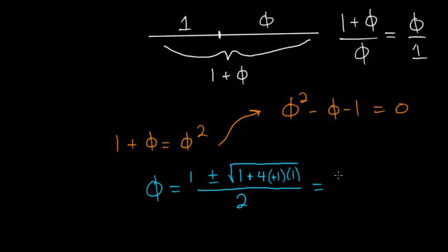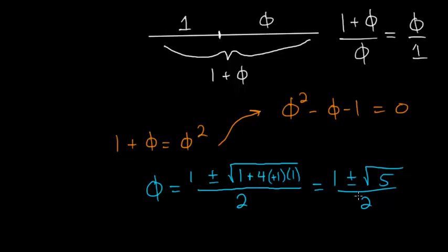So phi is equal to 1 plus or minus the square root of 5, divided by 2. If you take the positive case and plug it into a calculator, you will see that this does indeed equal 1.61803, and so on.